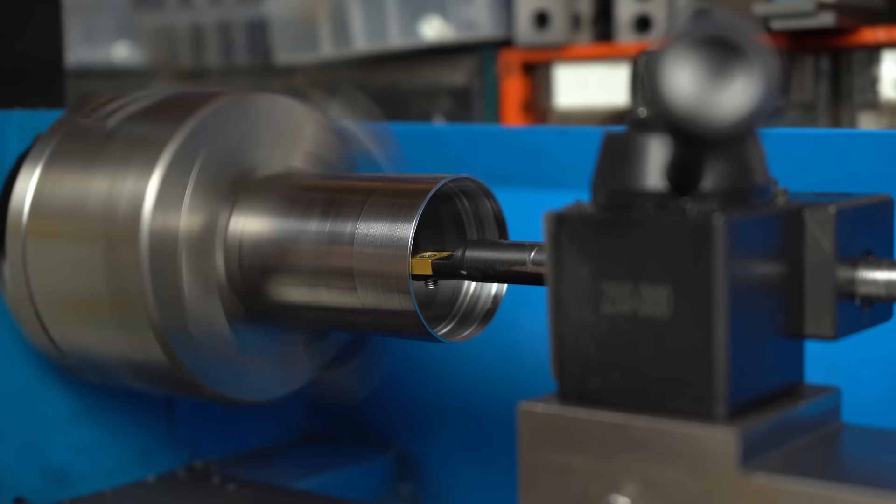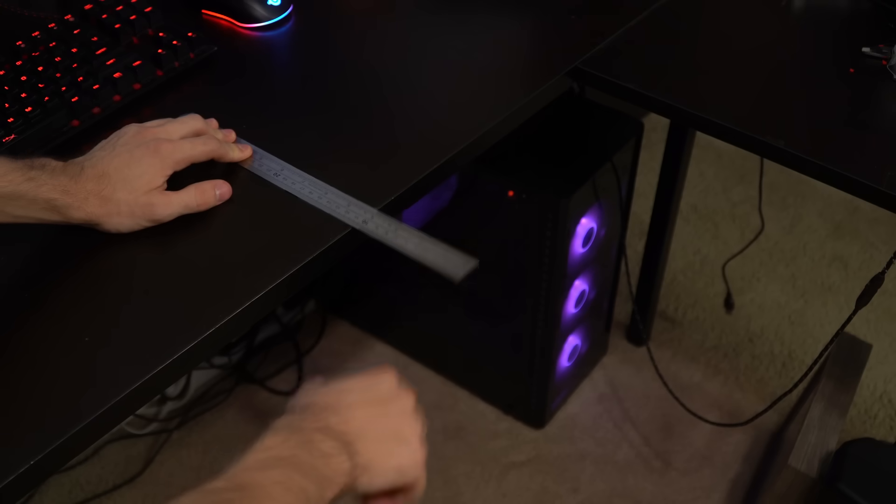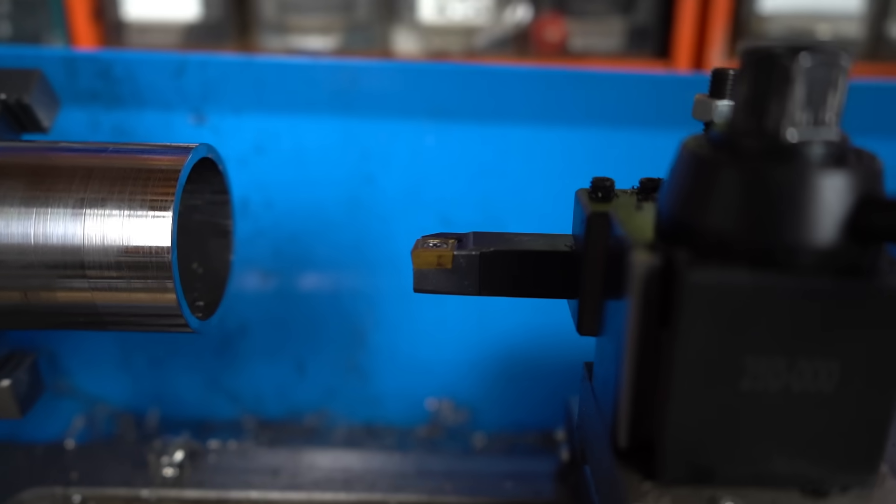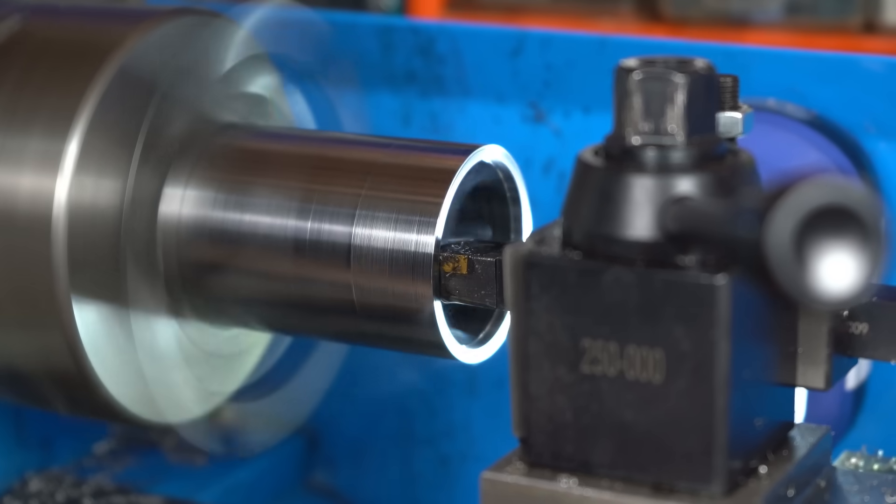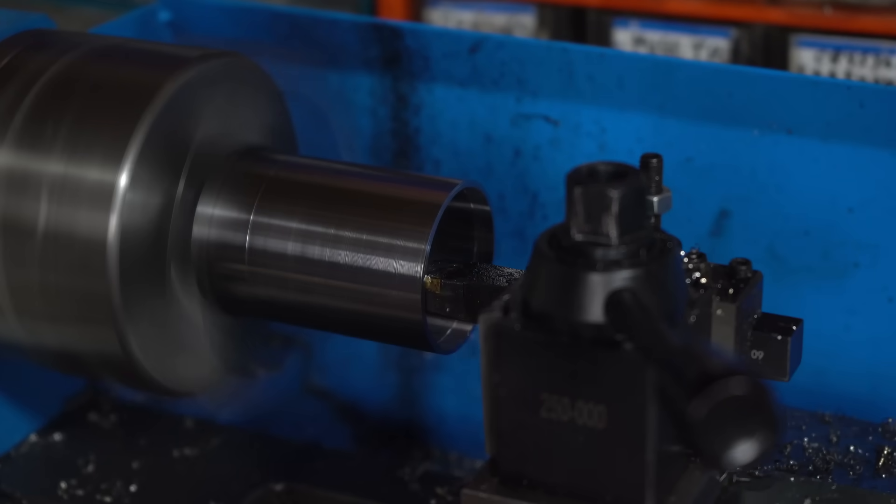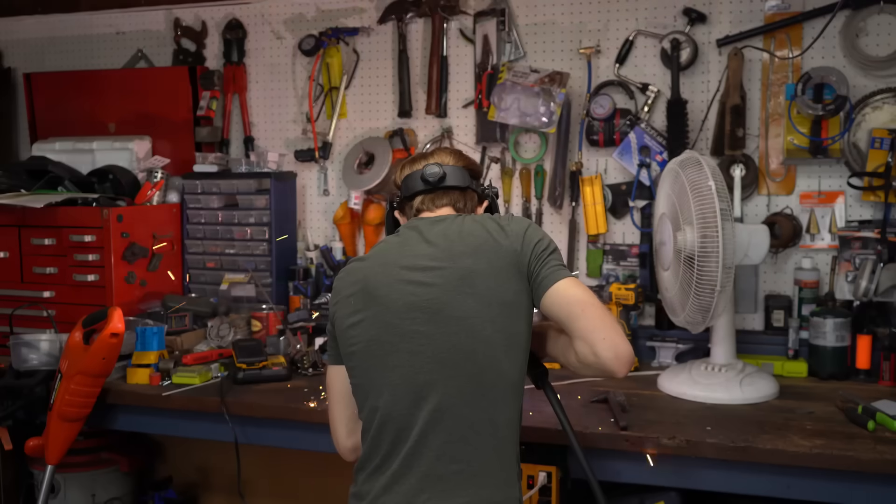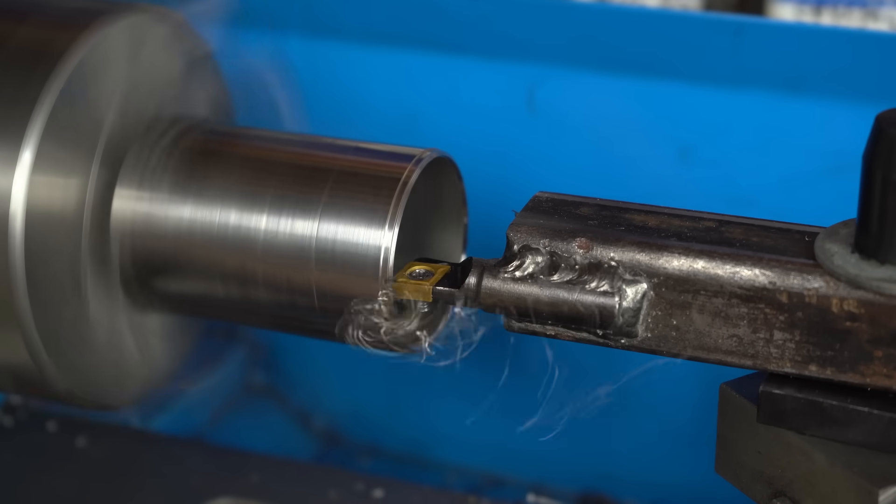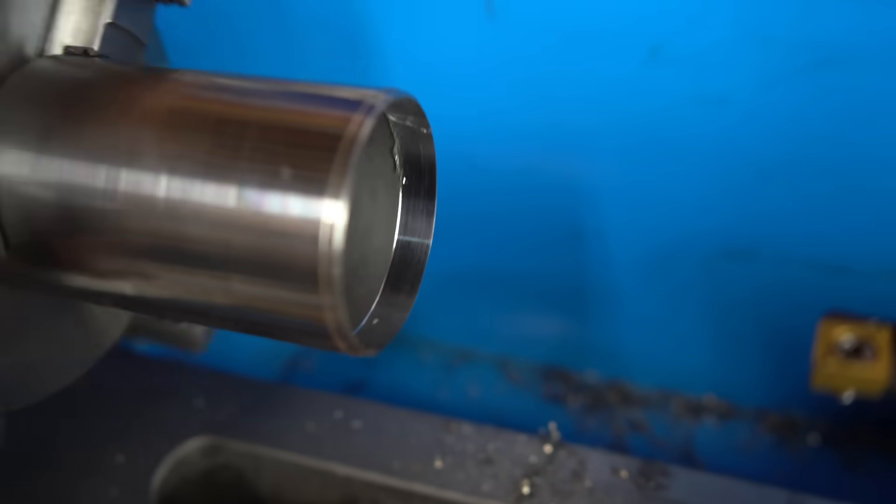When I have the boring bar stuck out far enough to pass through the whole cylinder, it chatters really badly. It's like when you put a ruler to the edge of a desk. The more it sticks out, the more it'll vibrate. But then I had a better idea. I turned a length of square tubing into this huge boring bar, which should be practically impossible to bend. It might benefit from a bit of a sharper insert, but beyond that, yeah that is not bad.